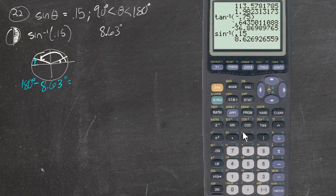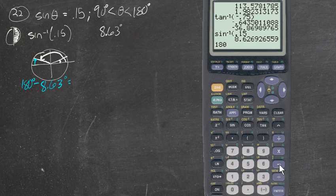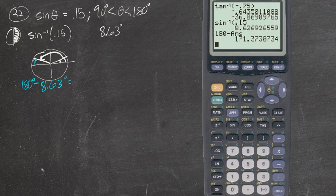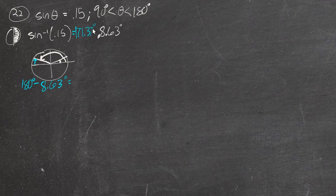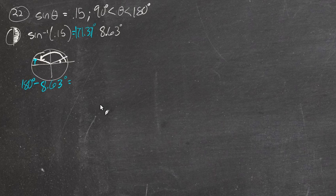So 180 minus 8.63 should give us our angle. Let's pull up the calculator. We'll use that one since it's more accurate than just two decimal places. 180 minus the answer. And we have 171.37. So we found an angle that has a sine of 0.15 and is between 90 and 180.